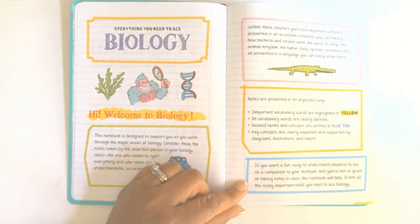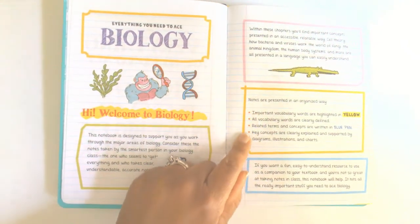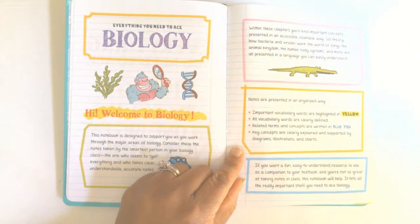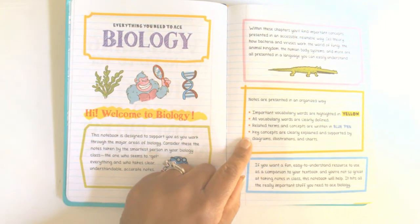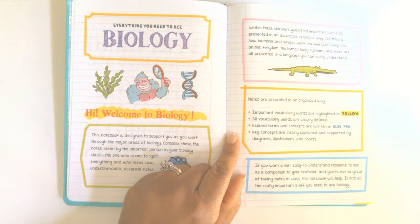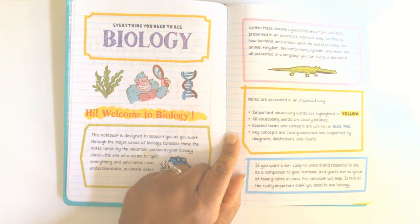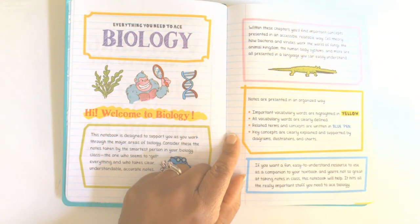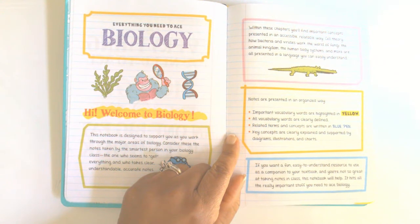We will start with the introduction and here it tells you how the notes or the book is presented. Important vocabulary words are highlighted in yellow. All vocabulary words are clearly defined. Related terms and concepts are written in blue pen. Key concepts are clearly explained and supported by diagrams, illustrations, and charts.